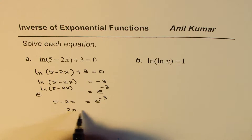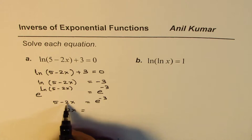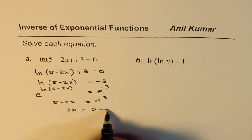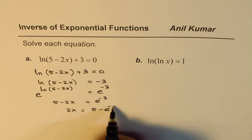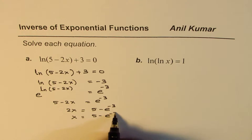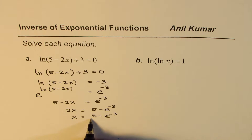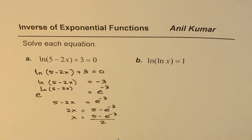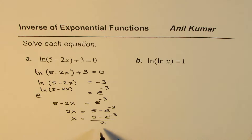From here, you can get 2x equals 5 minus e to the power of minus 3, or x equals (5 minus e to the power of minus 3) divided by 2. That is the solution to this particular equation.